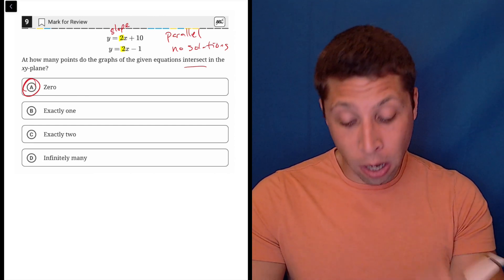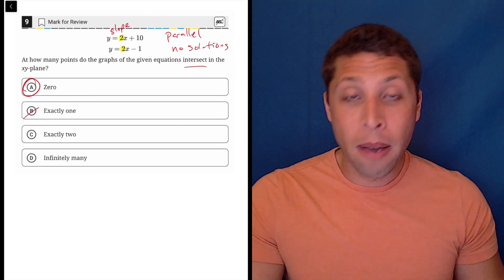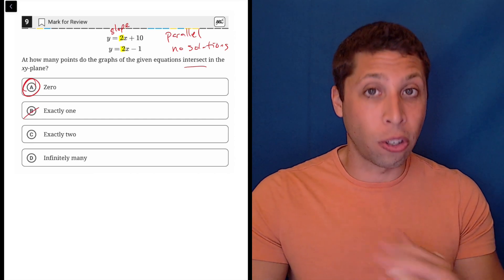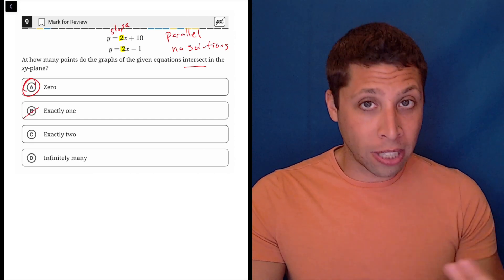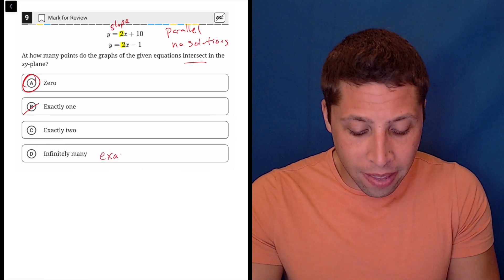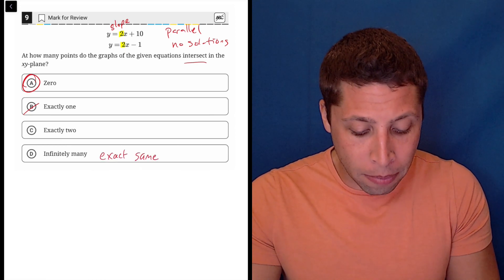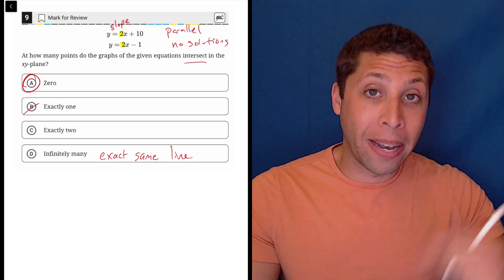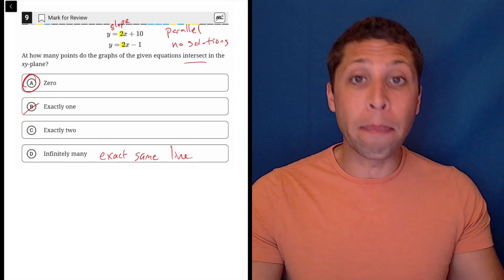If the slopes are the same, I already know it's not going to be something like b because it's going to have this weird situation. If the y-intercepts are also the same, then that's going to be choice D because then they are the exact same line, meaning they overlap at every single point, so they have infinitely many intersections.